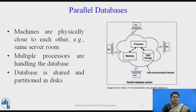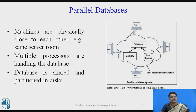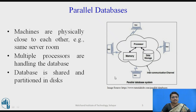In a parallel database, nodes are present and these nodes may share some physical resources like a processor, memory, or data storage. The machines are physically close to each other and may use the same server room. They are connected through LAN, multiple processors handle the database, and the database is shared among them. You can see in this diagram that there is an intercommunication channel through which all nodes communicate and resources may be shared.